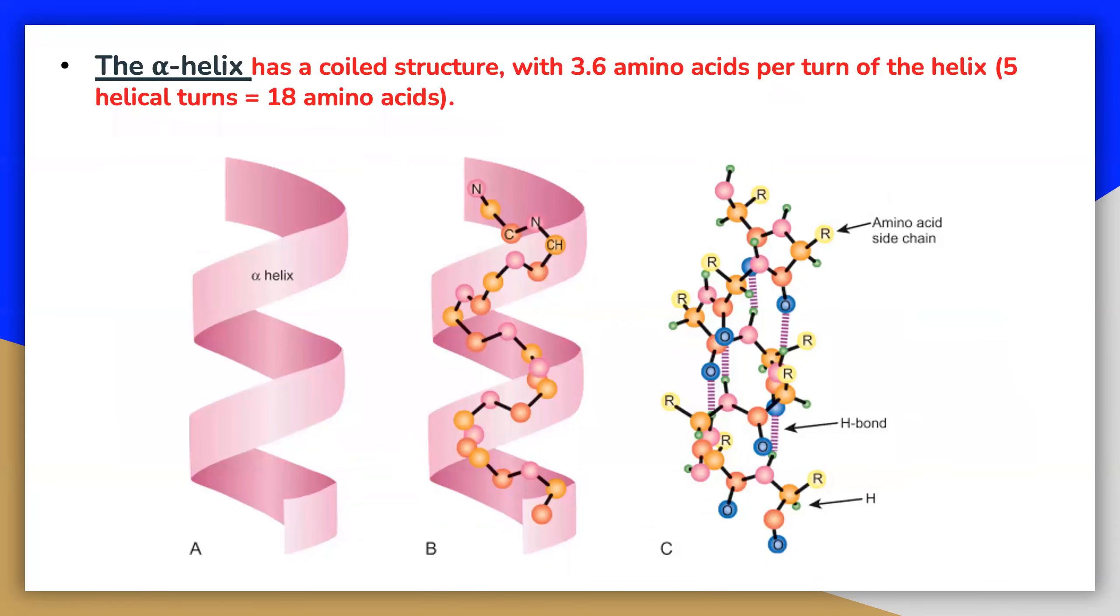The alpha helix has a coiled structure with 3.6 amino acids per turn of the helix. So five helical turns are formed by 18 amino acids.